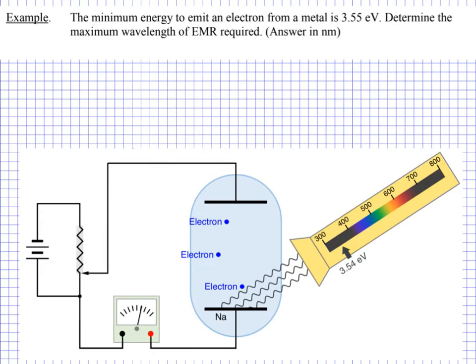For the second example, we are told that the minimum energy to emit an electron from a material is 3.55 eV, and we're asked to determine the maximum wavelength of the EMR required in nanometers. What we should remember is that this is essentially a conservation of energy: energy coming in equals energy coming out. In our photoelectric experiment, the energy coming in is the incident photon — hc over lambda incident — and that equals the energy required to liberate the electrons plus whatever kinetic energy those electrons have.